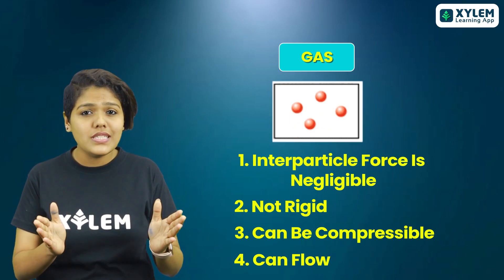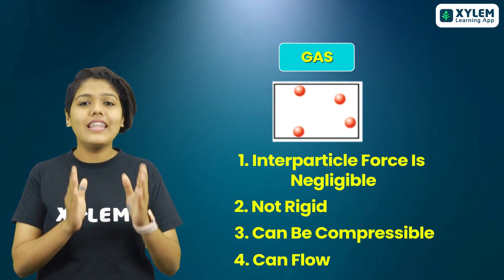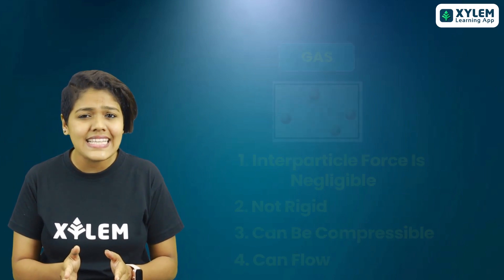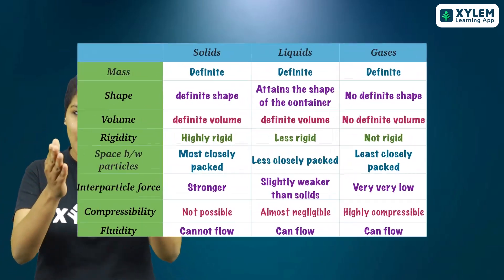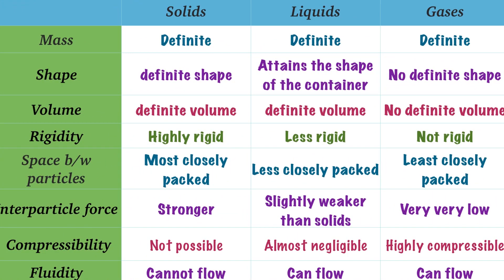These are the properties of solid, liquid and gas. Let's see all the properties in a single table. So these are the properties of the three states of matter. I hope you have enjoyed the class. Let's see next time. Bye-bye.